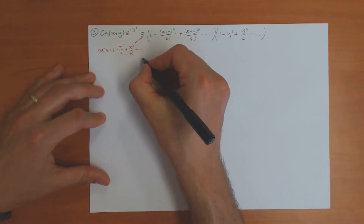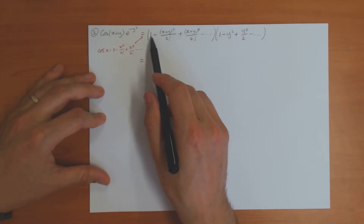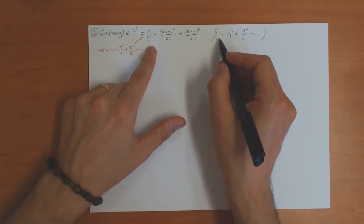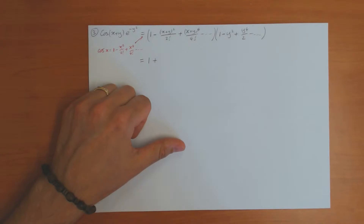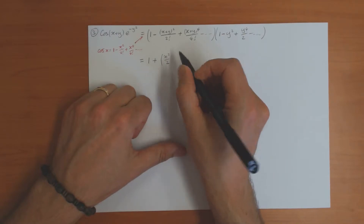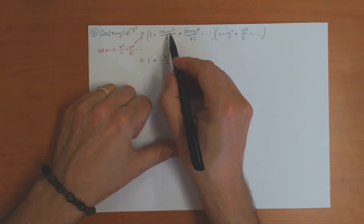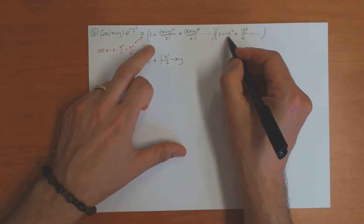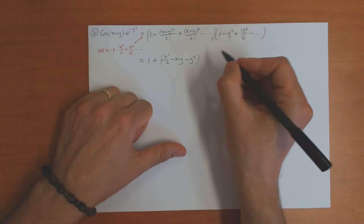You only get even terms here — x to the zero, x squared, x to the four, and so on. The constant term is one. The second-order terms: from the cosine expansion you get minus x squared over two, and you also get minus xy. From the e to the minus y squared term you get minus y squared. Those are the second-order terms.